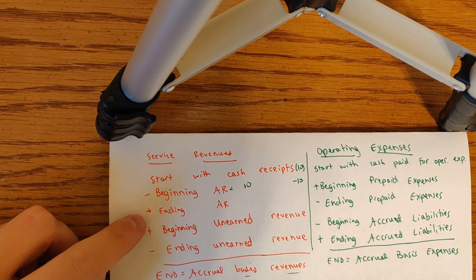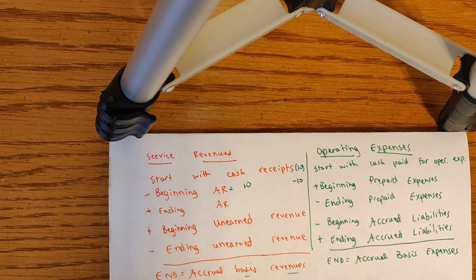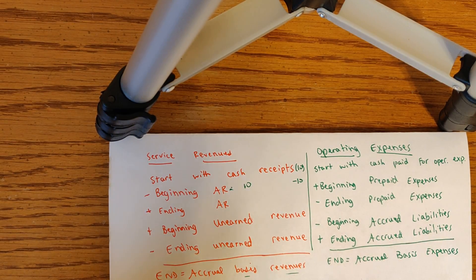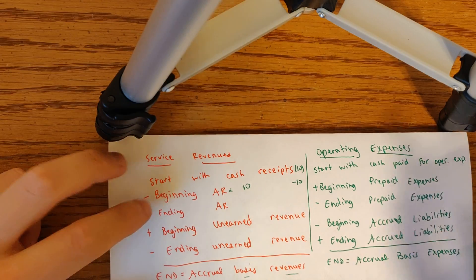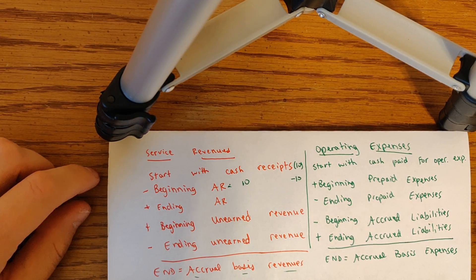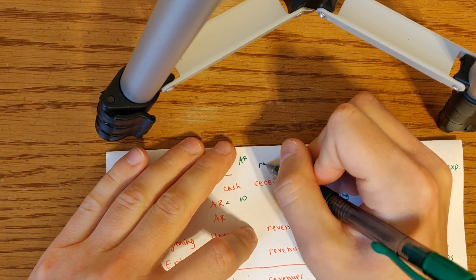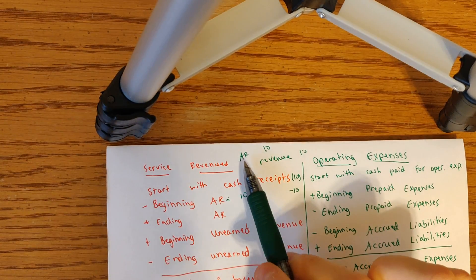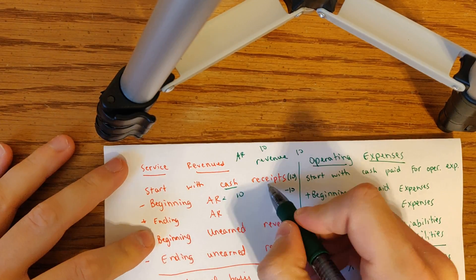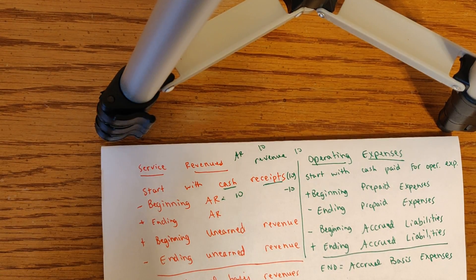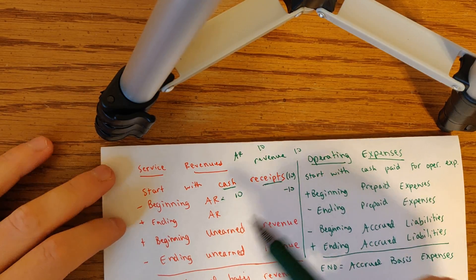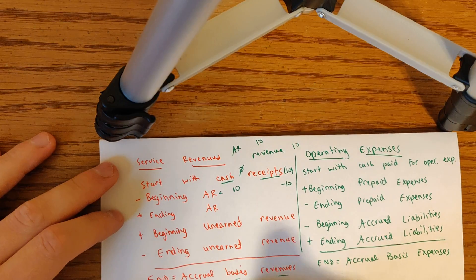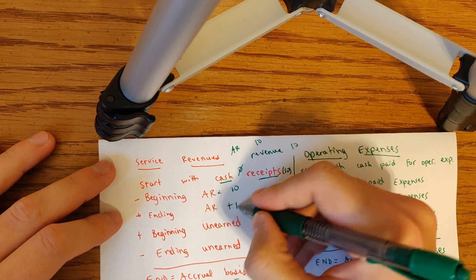The next item is ending accounts receivable — we add that. Ending accounts receivable represents revenue that was earned in the current period but not yet collected. We would have debited accounts receivable and credited revenue, but that amount is not included in cash receipts by definition. So if we had $10 of ending accounts receivable with zero cash receipts, we would add $10 to arrive at the correct accrual-based revenue.